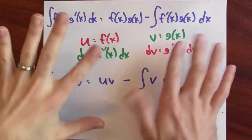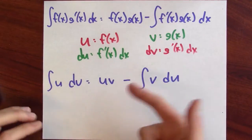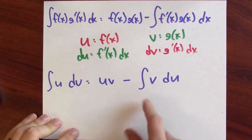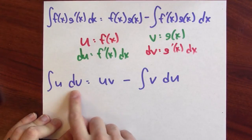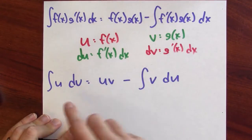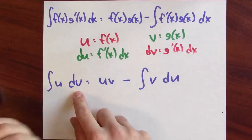With u-substitution, we had to come up with a single u. In contrast, when doing integration by parts, you not only have to pick a u, but you've got to pick a dv so that you can write your integrand as u dv. This makes integration by parts a bit harder to apply than u-substitution — I've got to find both a u and a dv. But anytime you're willing to differentiate part of the integrand at the price of anti-differentiating the other part, integration by parts will do that for you.